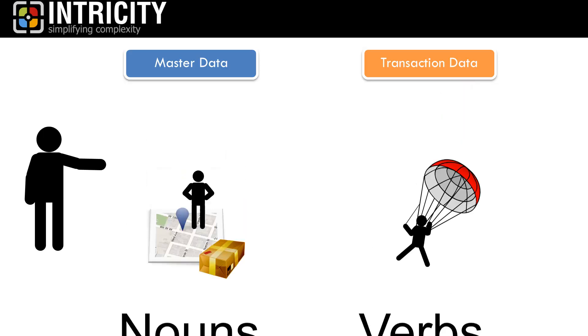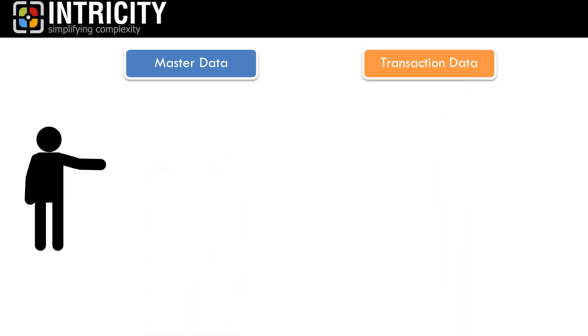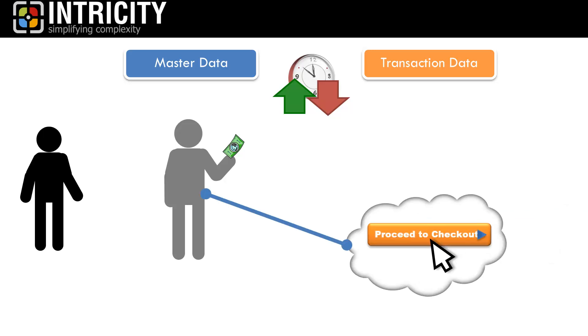Another way of deciphering master data from transaction data is how often that data is changing. Master data, like you the customer, should be consistent. Whether you're checking out at the company website or checking out at the cash register, you are you no matter where the company interacts with you. Unlike the transaction data, which is changing every time you purchase something from the store.